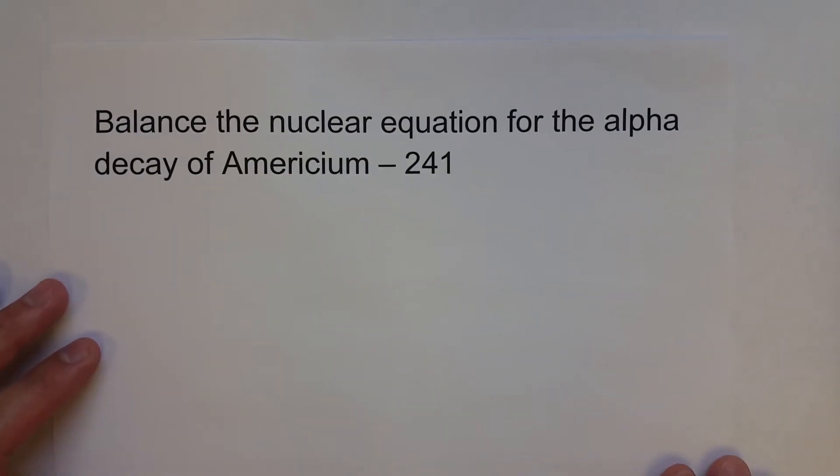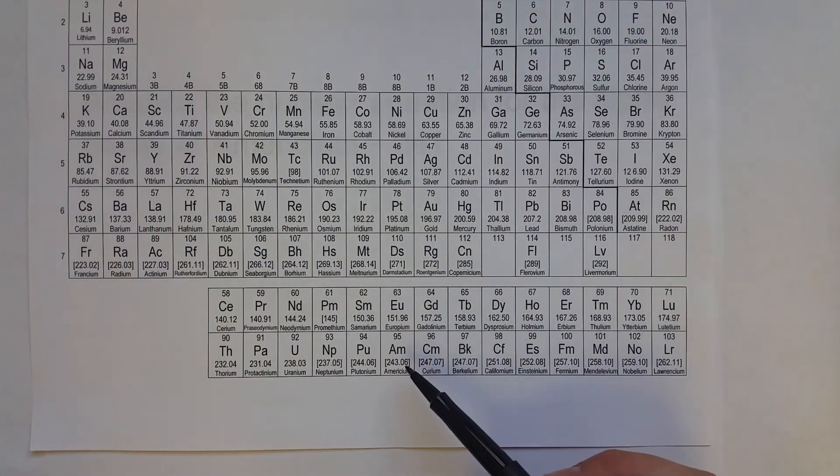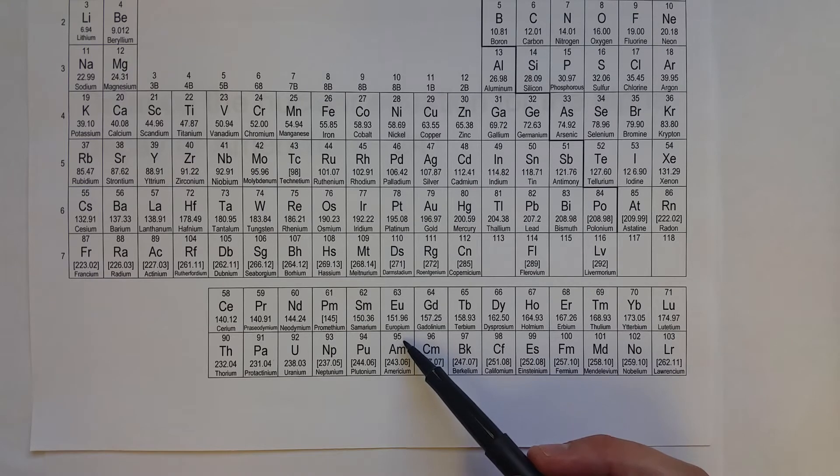First, let's balance the nuclear equation for the alpha decay of americium-241. Now, to do any of these nuclear equations, we're going to need a periodic table. Americium is a rare earth element in the actinide series. It has 95 protons and so, of course, its atomic number is 95.